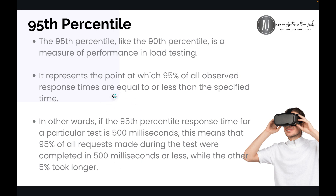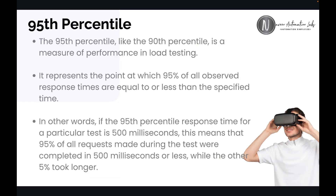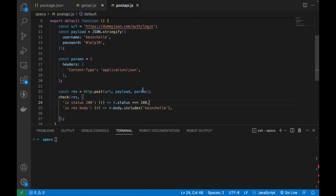Do we have any support or metric for 90th and 95th percentile in K6? Yes, we have that. These are the two major important metrics to calculate bottlenecks or any performance issue for your application, services, APIs, or features from a load testing or performance testing point of view. K6 supports that. So let's look at a sample K6 script — here we have a POST API.